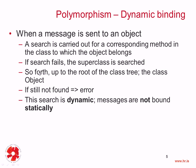If the method is not found in the superclass, then we continue in the superclass of the superclass, and so on, until we get to the root of all the classes — the class Object. If the Object class does not have a method corresponding to the message that was sent, then we get an error. This search is, of course, dynamic — messages are not bound statically at compile time; they are bound at runtime.